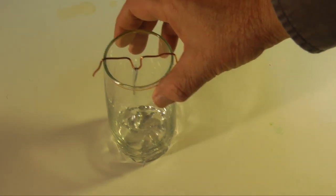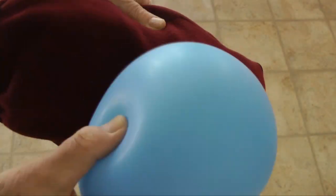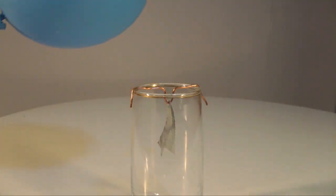The completed electroscope looks like this. To test it, rub a balloon on fabric and bring it close to the top of the glass. The aluminum leaves separate. An electrostatic field has been detected. Our ancient electrical instrument works.